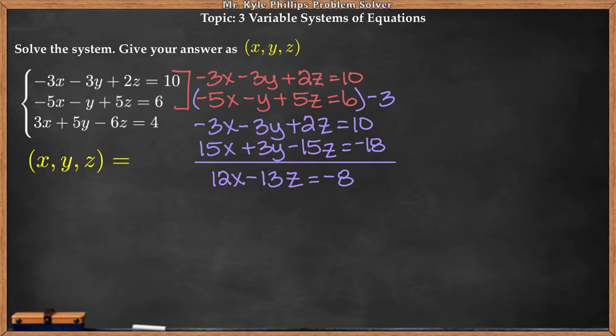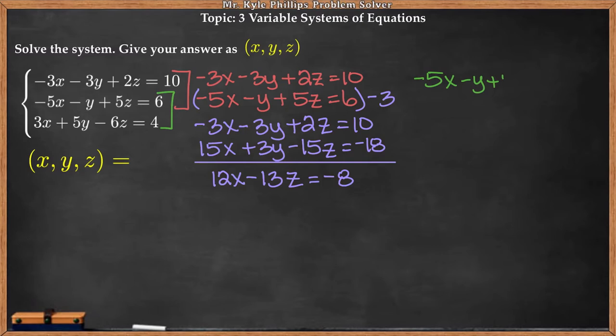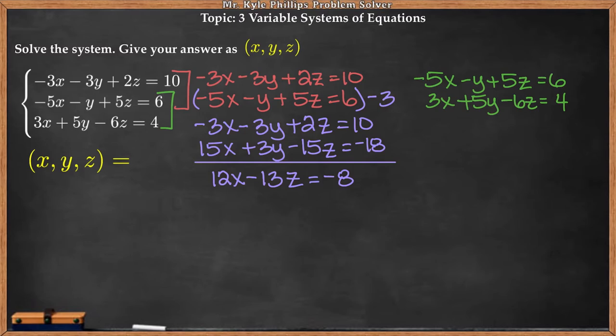What I'm left with is 12x minus 13z equals negative 8. Now we know how to solve systems of equations with two variables, so this is a much nicer equation to work with. Since I paired the first two equations and got rid of the y variable, let's pair the bottom two and also get rid of the y variable. I'll take those two and write them over here: negative 5x minus y plus 5z equals 6.